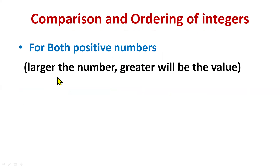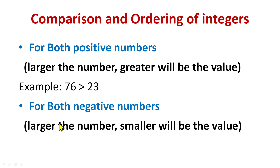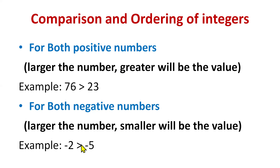If both numbers are positive, the larger number has the greater value — for example, 76 is greater than 23. If both numbers are negative, it works differently: the larger the number, the smaller the value. For example, with minus 2 and minus 5, the larger number is 5, but the value of minus 5 is smaller. So minus 2 is greater than minus 5. If both numbers are negative, minus 5 is less than minus 2.